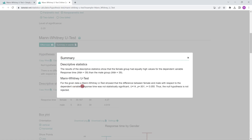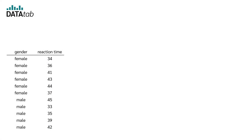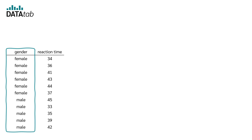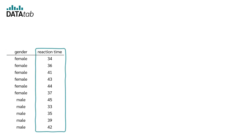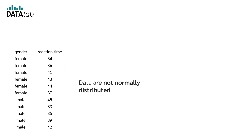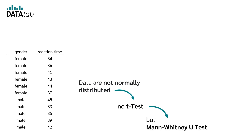Here we see the results. If you are not sure how to interpret the results, just click on 'summary in words'. For the given data, a Mann-Whitney-U test showed that the difference between female and male with respect to the dependent variable response time was not statistically significant — thus the null hypothesis is not rejected. Now we calculate the Mann-Whitney-U test by hand. Unfortunately the data is not normally distributed, so we cannot use a t-test and we calculate the Mann-Whitney-U test instead.